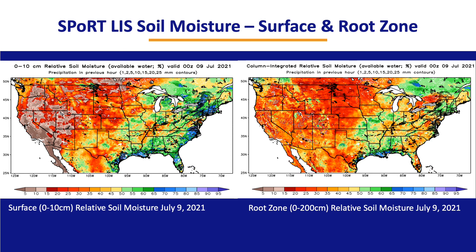Here are a couple of images of output from that product. On the left is the surface relative soil moisture or available water on July 9th, and on the right is the root zone relative soil moisture at the same time. This allows you to compare what's at the surface level — reflecting more immediate, recent effects of precipitation — versus the root zone on the right, which represents the longer-term status of the soil column.